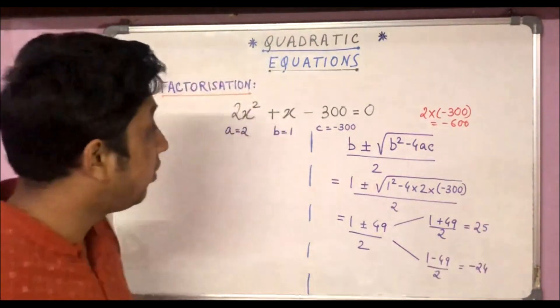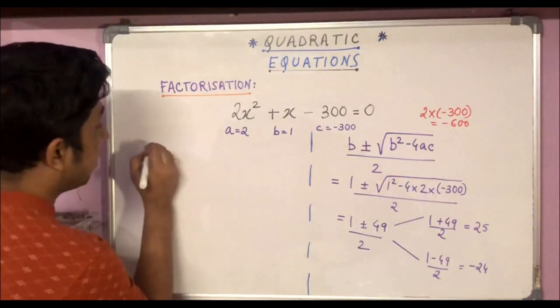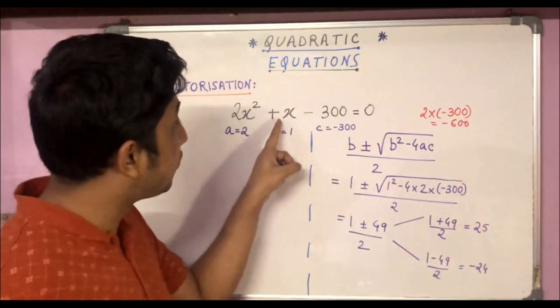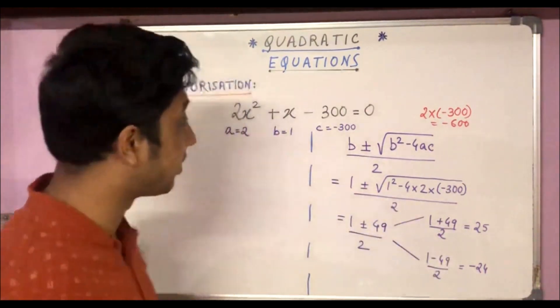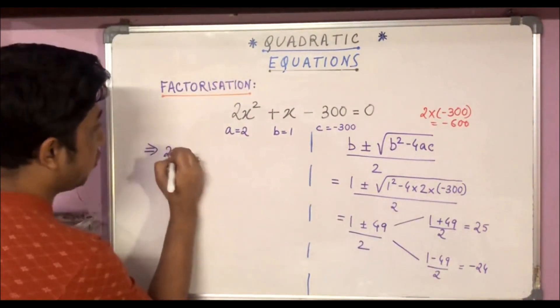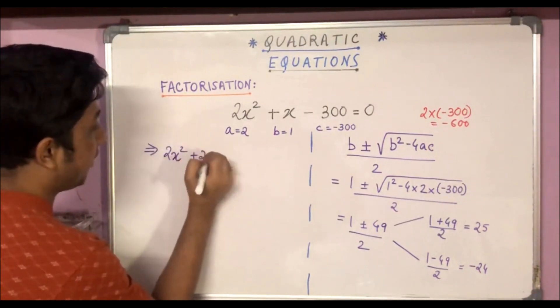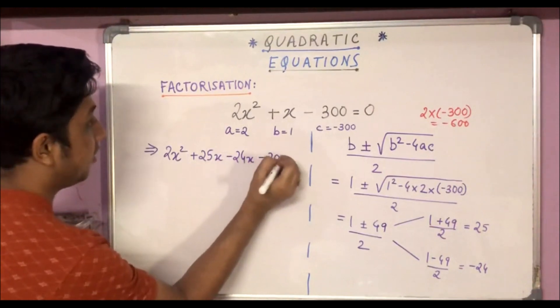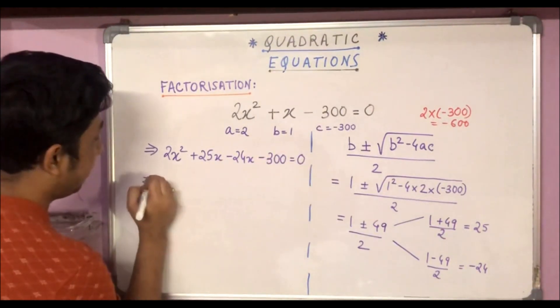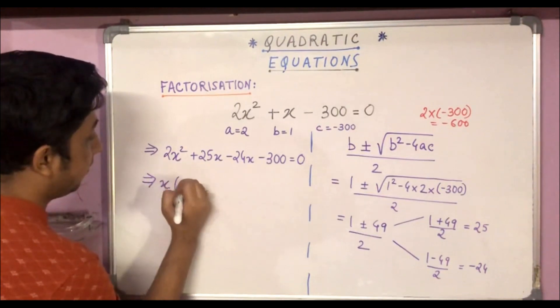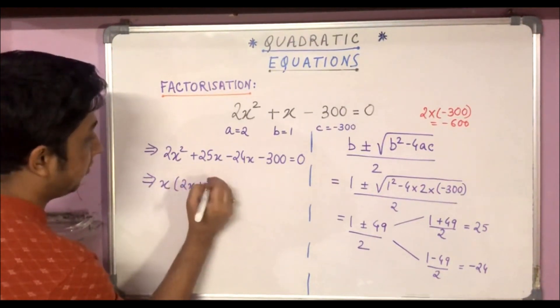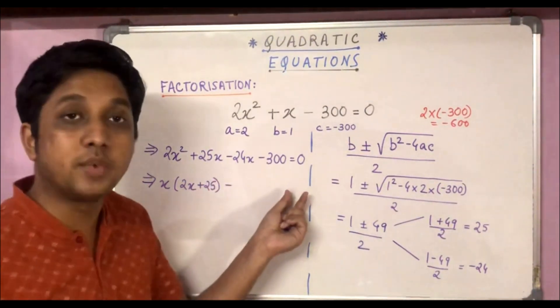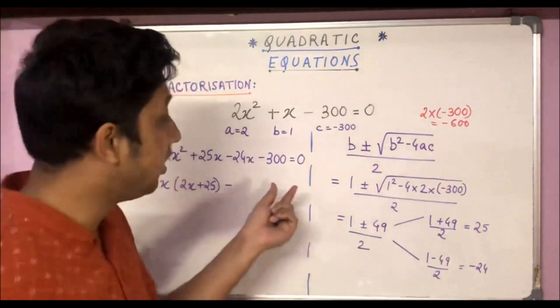So let's proceed with completing the factorization using this middle-term break. We'll split plus x into plus 25x and minus 24x. So 2x² + 25x - 24x - 300 = 0. Taking common factors, we can take out x from the first two terms and -12 from the last two terms.